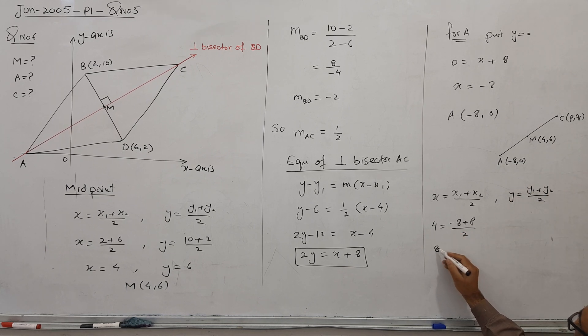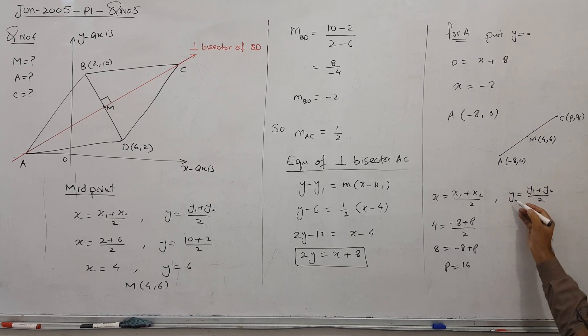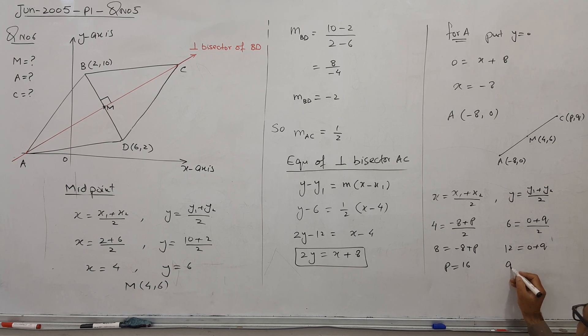This second corner element comes here. 2 times 4 is 8. Is equal to minus 8 plus P. 8 plus 8 becomes 16. Similarly, this Y coordinates come here. First Y called one corner element. Second corner element. So this is called first corner. Second corner. 2 times 6 is 12. And alhamdulillah. I got C coordinate 16, 12. And I think so concept is fully clear.